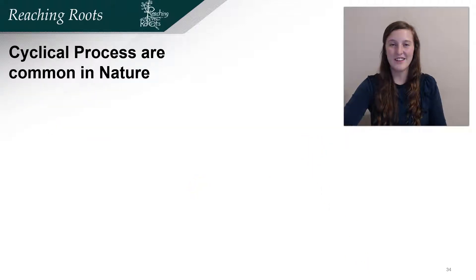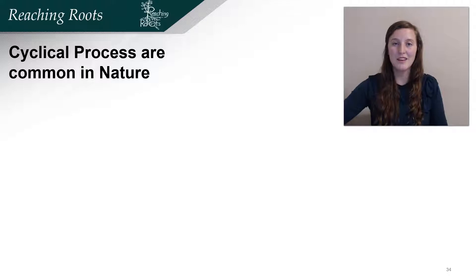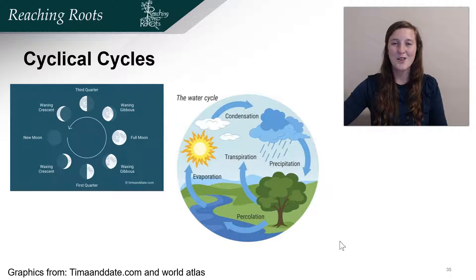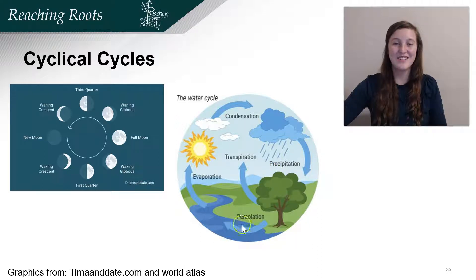What cyclical processes did you think of? I have a few examples. Cyclical processes are very common in nature because they allow the process to be more sustainable and efficient. For example, the moon cycle, or the hydraulic cycle — the water cycle. If there wasn't a cycle, we would run out of water on Earth.